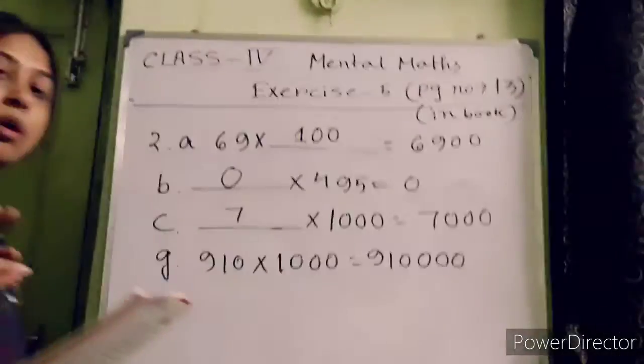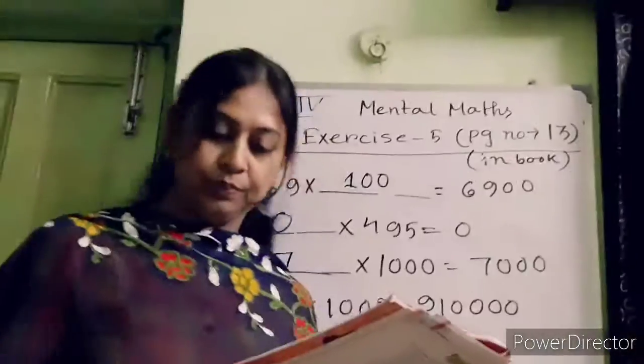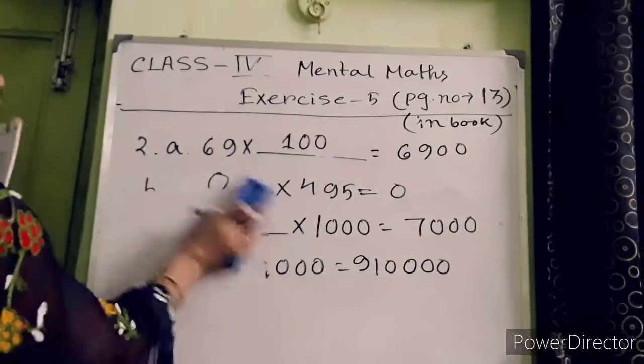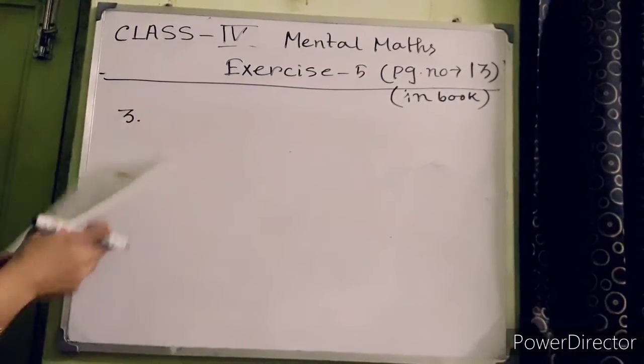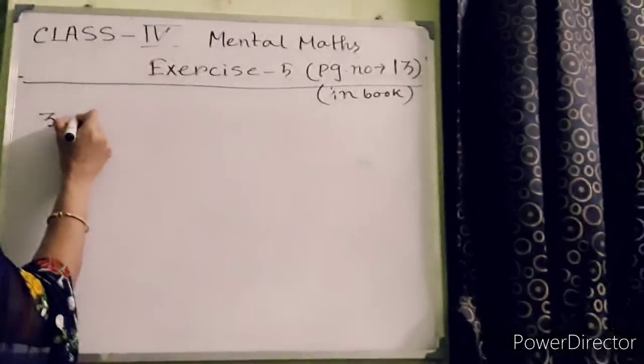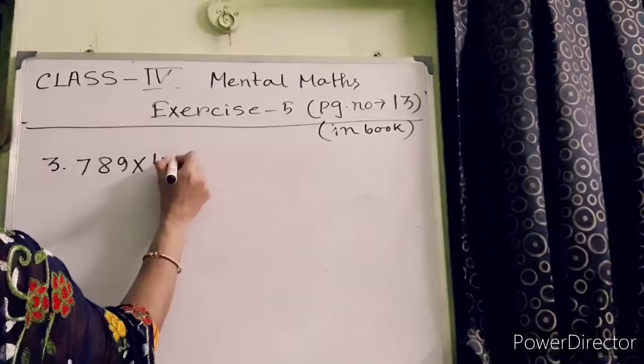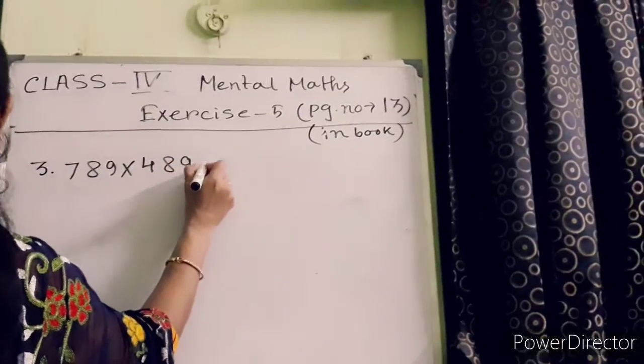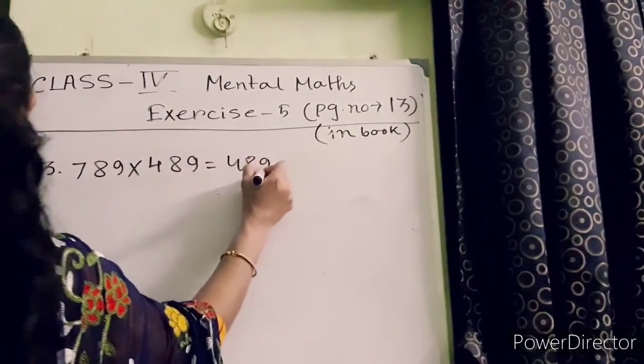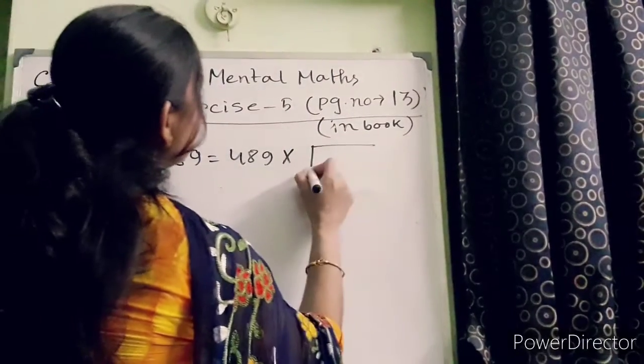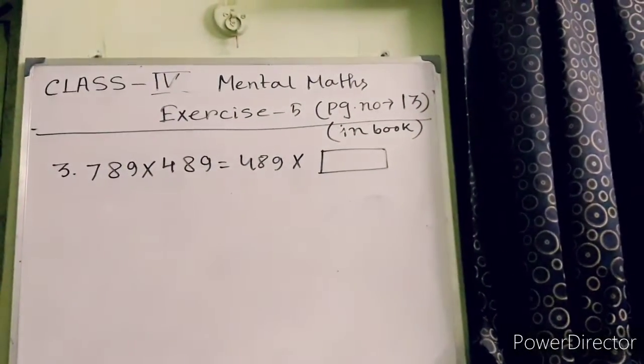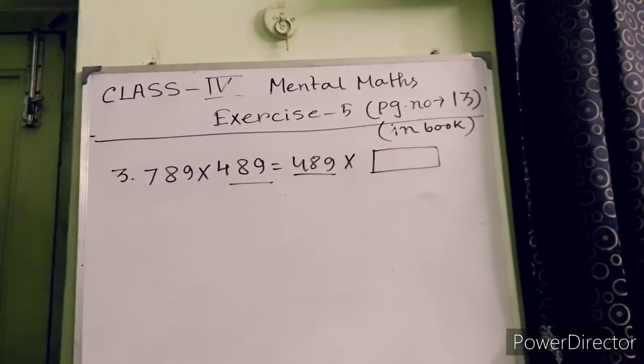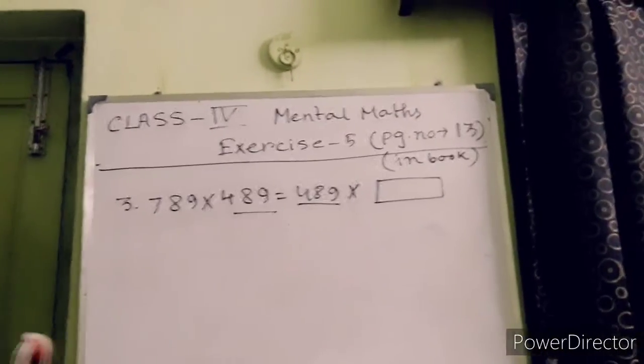And others you will solve by yourself. Now the last one, number 3. Fill in the boxes to make the following statement true. 789 times 489 equals 489 times what? This one is also bigger, so which number has to go there? 789.